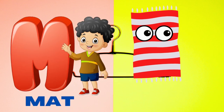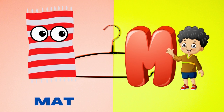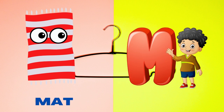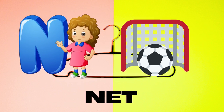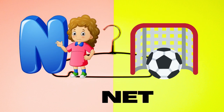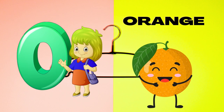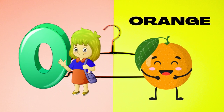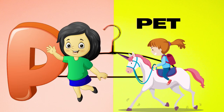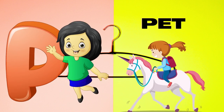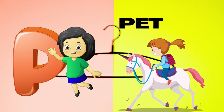M is for mat, m-m-mat. N is for net, n-n-net. O is for orange, o-o-orange. P is for pet, p-p-pet.